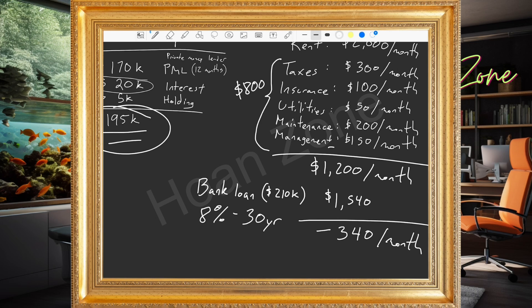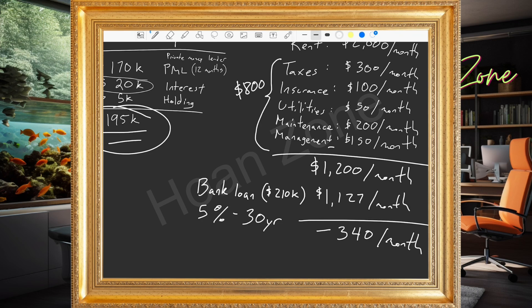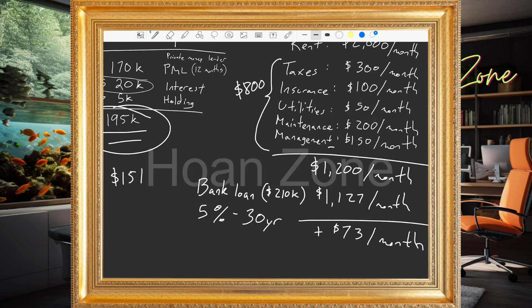Let's look at a different example. Instead of 8%, let's say 5%. At 5% over 30 years, the payment is $1,127 per month. Now we are positive — positive $73 per month. And you put $15,000 in your pocket from the refinance, which is where you got the bank loan to pay back your private money lender plus all the holding costs. So you make an additional $73 per month.